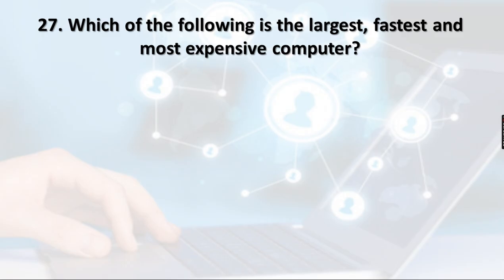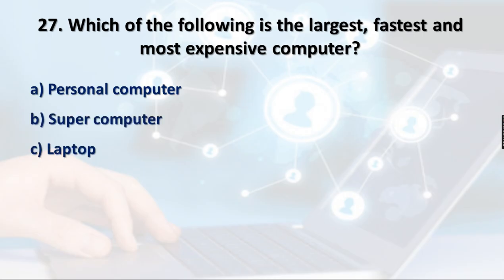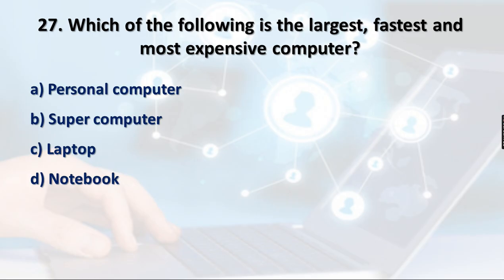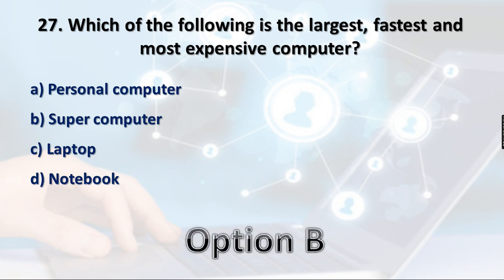Question 27: Which of the following is the largest, fastest, and most expensive computer? Options: Personal computer, Supercomputer, Laptop, Notebook. Laptops, notebooks, and personal computers are not the most expensive when compared to a supercomputer. A supercomputer is the largest, works very fast, and is very expensive — so option B, supercomputer, is the right answer.